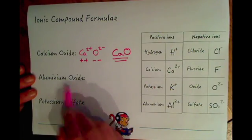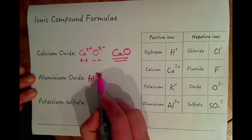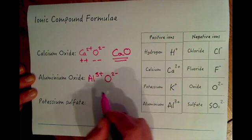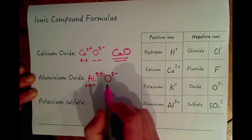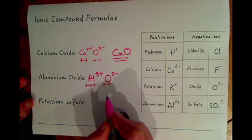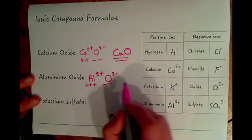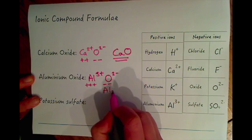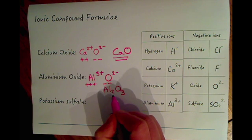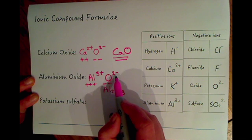So for aluminium oxide over here we've got aluminium is Al3+ and we've got oxide which is O2-. In this case we've got three pluses and two minuses, so to try and balance these out we can have two aluminiums and three oxygens, so we'd end up with Al2O3. And the Al2O3 would then give us six pluses and six minuses, and therefore they would all balance out, so that is our formula for aluminium oxide.